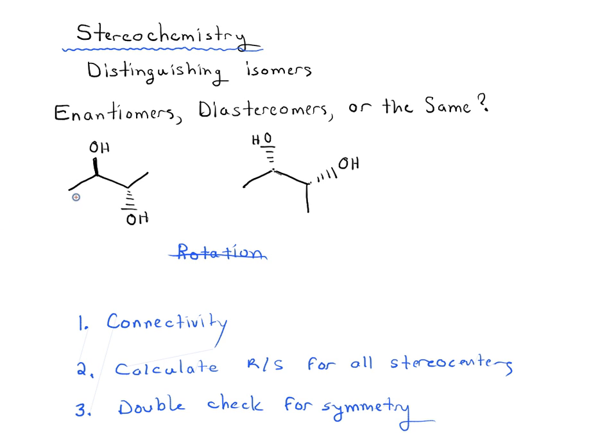First of all, connectivity. How are these two molecules connected? Are they connected the same way or a different way? Remember we're not looking at dashes or wedges here, we're just looking at what each atom is attached to. Carbon 1 is a CH3, carbon 2 is attached to an OH, carbon 3 is attached to an OH, carbon 4 is CH3. So I'd say connectivity here is actually exactly the same.